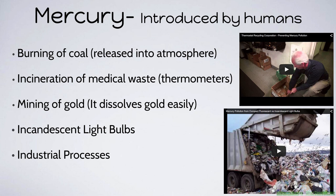When we mine gold, we actually use mercury to help separate the gold because it dissolves easily. Then there are incandescent light bulbs — the ones used in the light bulb fundraiser — and each bulb has the amount of mercury equal to the tip of a pen. So if you throw away a lot of light bulbs at once, you're putting mercury into the environment. It's very important that you properly recycle those bulbs — you can bring them to Home Depot, Best Buy, etc. And then some industrial processes, like factories and production facilities, can release mercury into the environment and it can get into the water. There are two videos here: one about how to properly recycle old thermometers and another about mercury pollution from incandescent light bulbs.